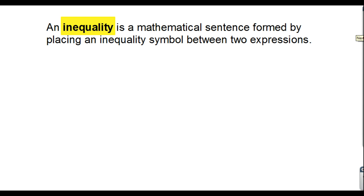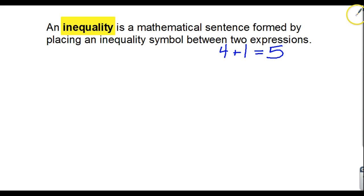So let's first go ahead and define what an inequality is. It's a mathematical sentence formed by placing an inequality symbol between two expressions. An inequality symbol is something that is not equal. If we have something like four plus one, that's equal to five — those are two equivalent expressions. If I go up four and up one, it's the same as going up five. So those would be equal. And so an inequality is when they're not equal.